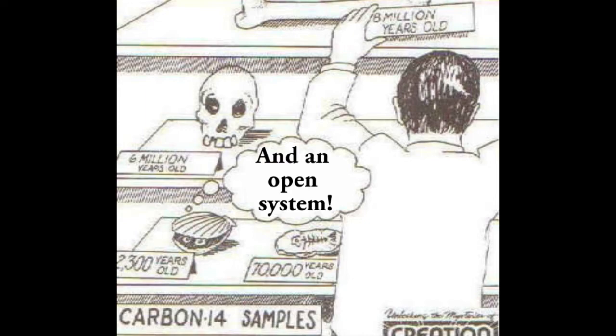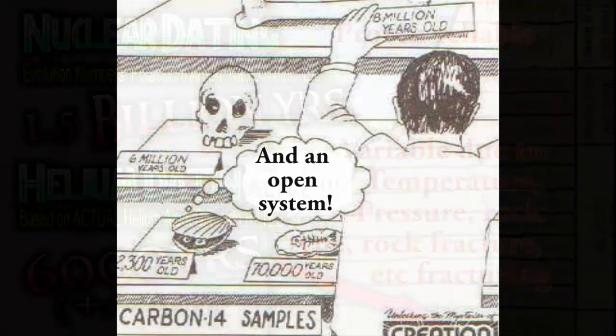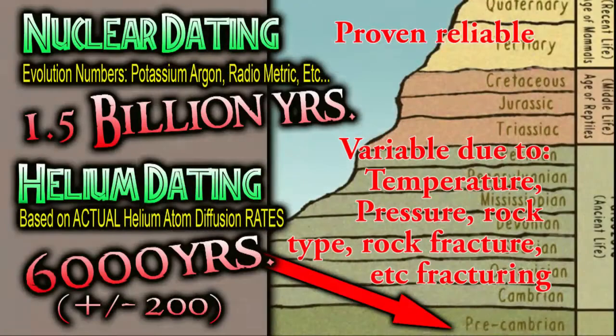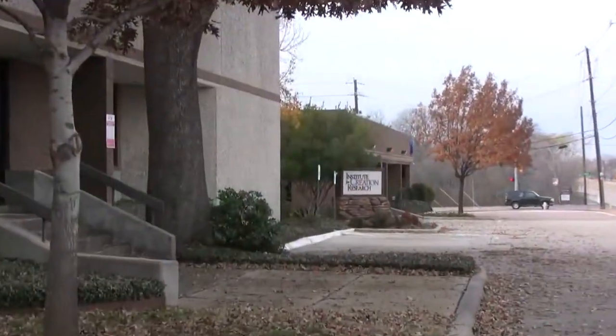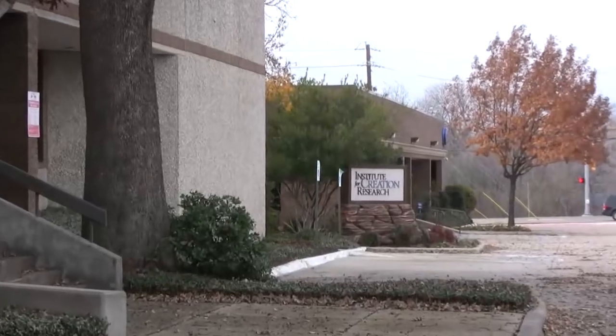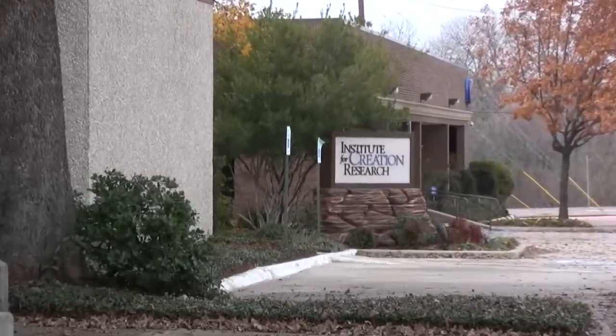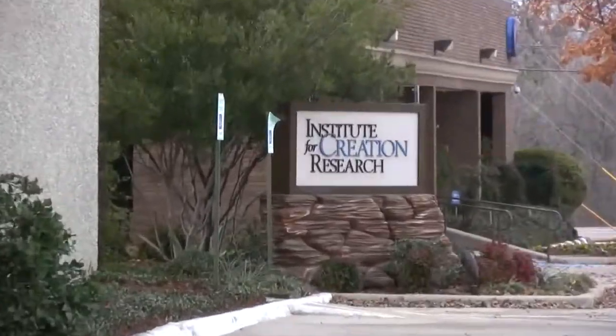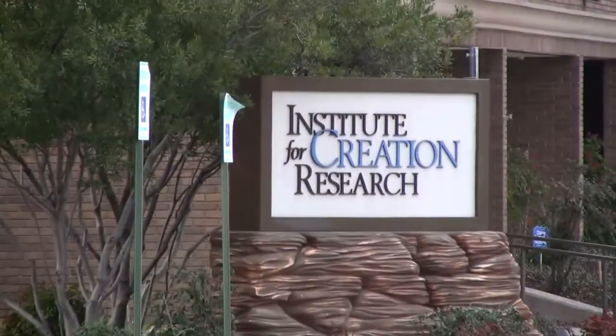We start by not trusting people who start with a foregone conclusion and thus get selective about which evidence they bring forward and how accurate it is. In my experience, young earth creationists are out on this account. So, how do I answer the nonsense online?